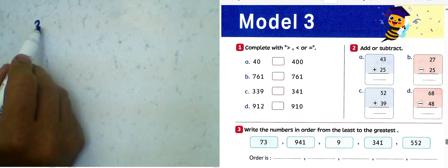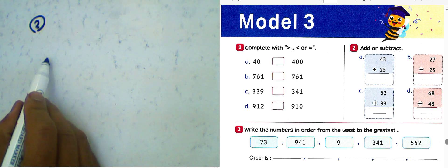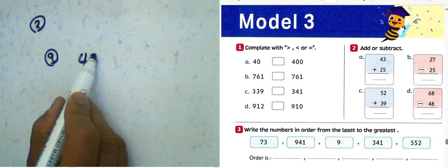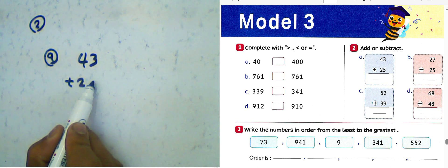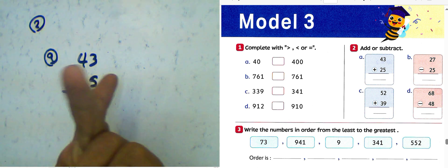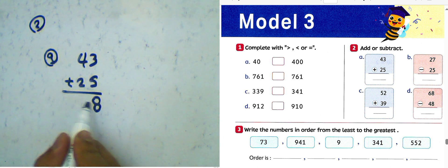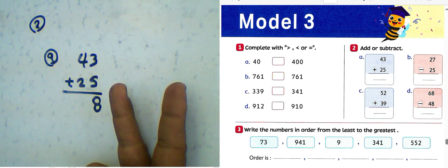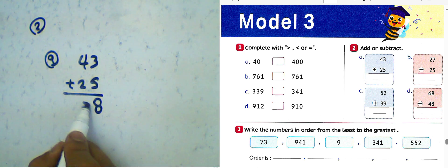Next question number two, add or subtract. Letter A: 43 plus 25. 5 plus 3, just after 5, 6, 7, 8. 4 plus 2, just after 4, 5, 6. The result will be 68.